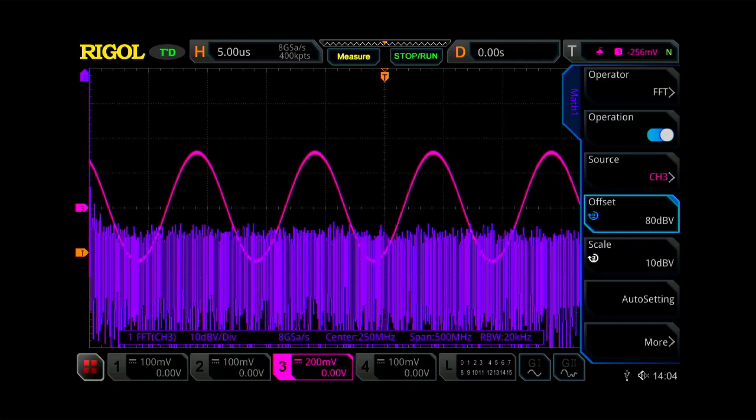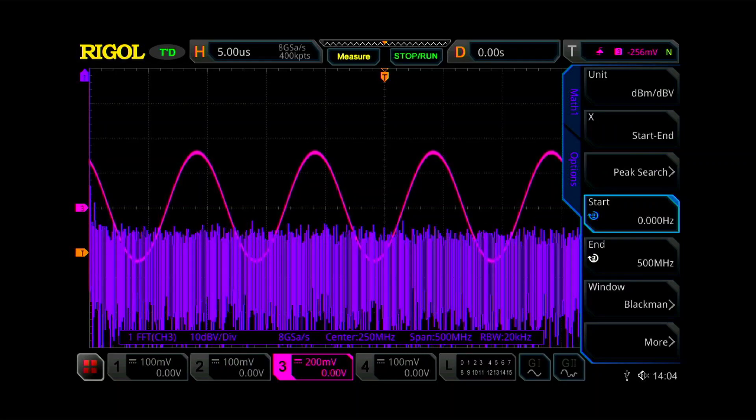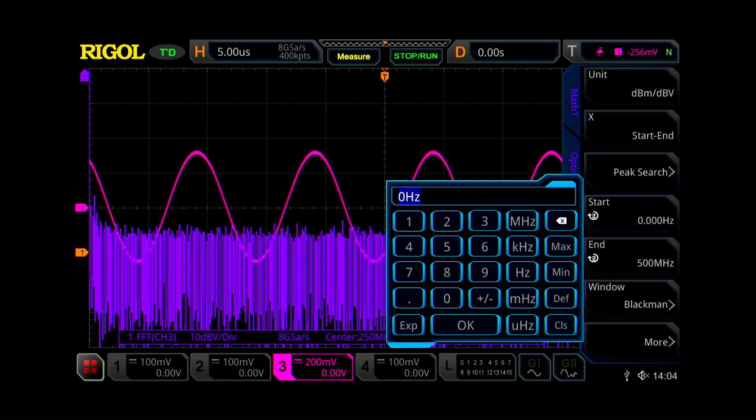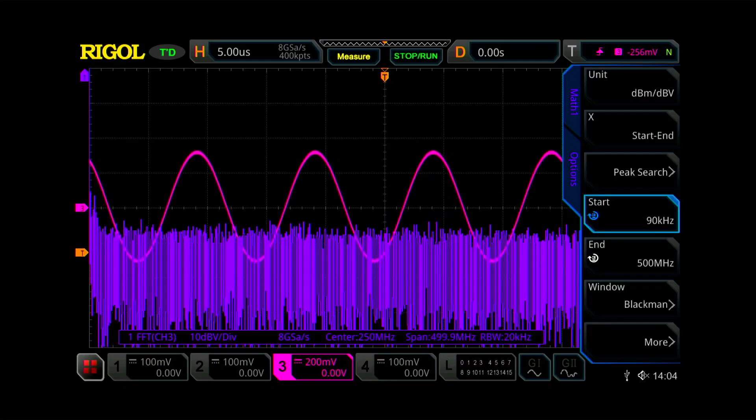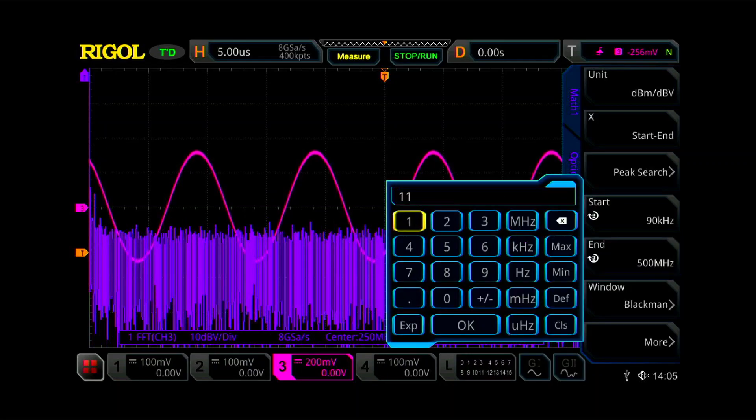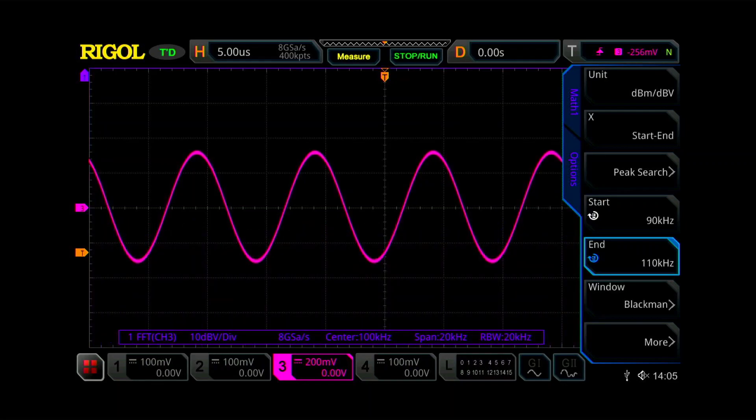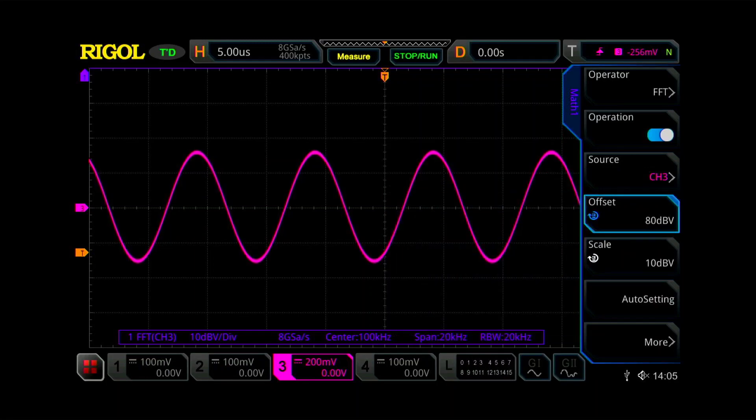Now what we need to do is we need to set the start and stop frequencies. So we're going to say the start frequency is going to be 90 kilohertz. And the stop frequency will be 110 kilohertz. So we've got it kind of captured and it disappeared on us. So let's go back to offset and see if we can't find it. There it is.